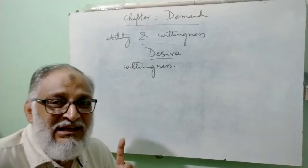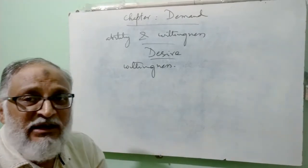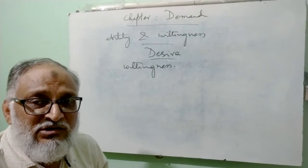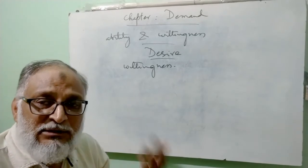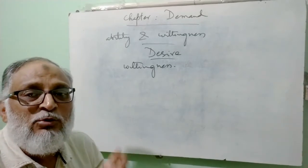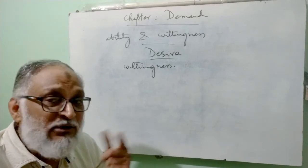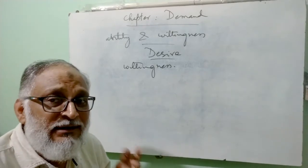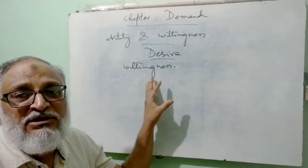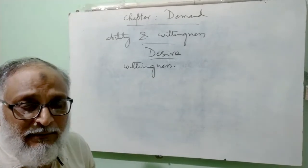This means the condition for demand is both ability and willingness. That is, the quantity of something which I can buy and also want to buy — that I will call demand. The thing which I want to buy but cannot buy — that remains my wish or desire. I think this is clear.